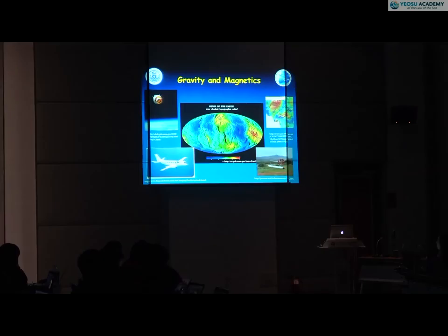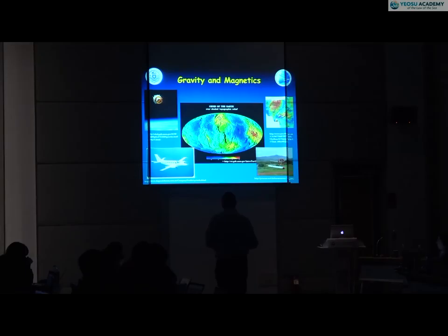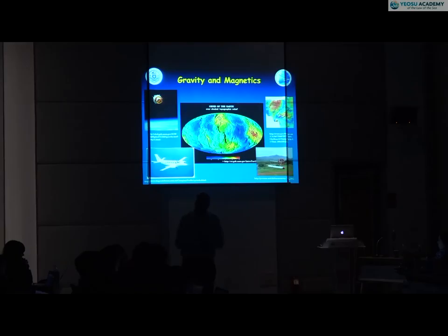We also use gravity measurements and magnetic measurements for supporting evidence — particularly when trying to determine the nature of submarine ridges or distinguish between oceanic and continental crust. Remember that oceanic crust has very different density from continental crust, so its gravity signature is different. The Earth's magnetic field is imprinted on rocks — particularly oceanic rocks — so if you see good magnetic signatures, it's more likely to be oceanic rock.